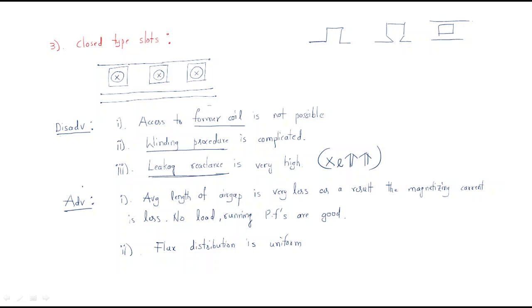The advantages of closed type slots: the average air gap length is very less. By doing this, the complete air gap decreases and as a result the magnetizing current is also very much reduced. No-load and running power factors are very good — both are improved significantly. Flux distribution is completely uniform. However, access to formal coil is not possible, winding procedure is complicated, and leakage reactance is very high — these are the problems with closed type slots.